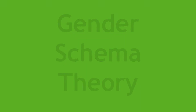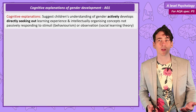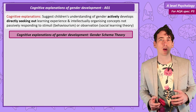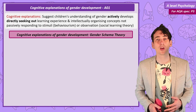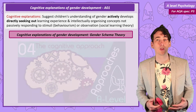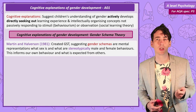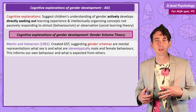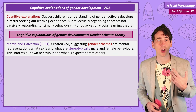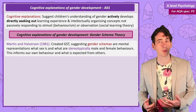Our second cognitive theory is Gender Schema Theory, created by Martin and Havison. A gender schema is a mental representation and a package of stereotypically masculine and stereotypically feminine gendered behaviours. Those schemas then both influence our own behaviour, keeping it in line with our gender schema, and the type of behaviour we automatically expect from the people around us.